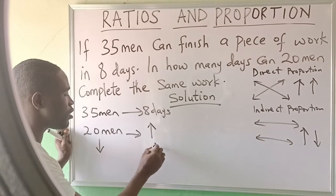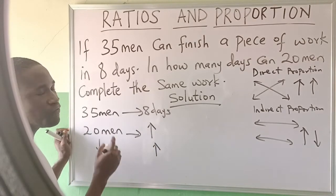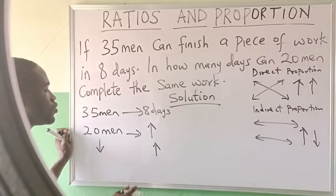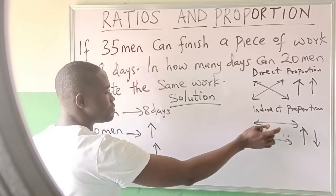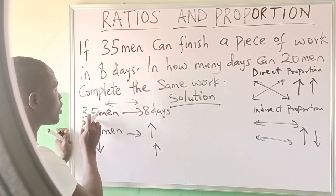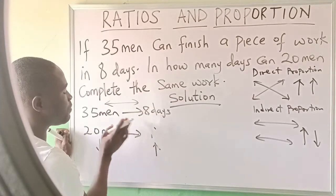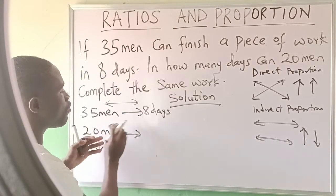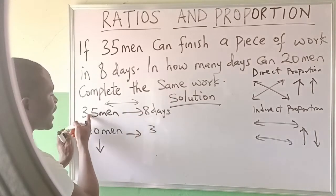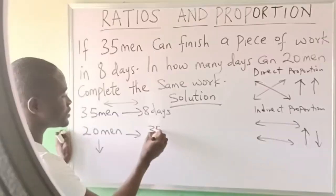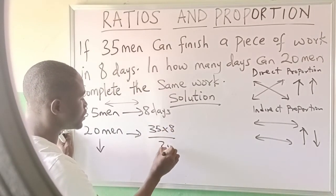So what you now do is use this pattern: multiply this by this. We have 35 times 8, all over 20.